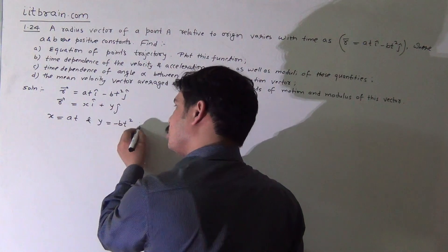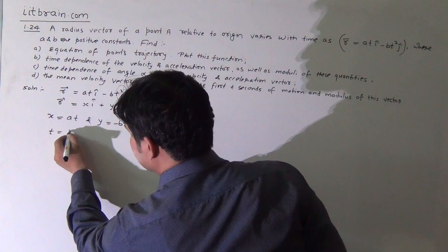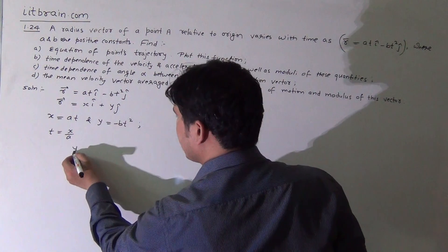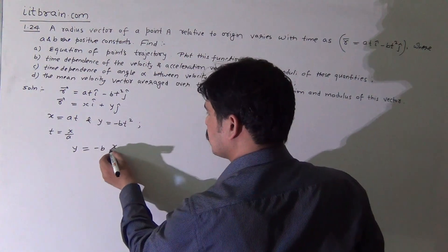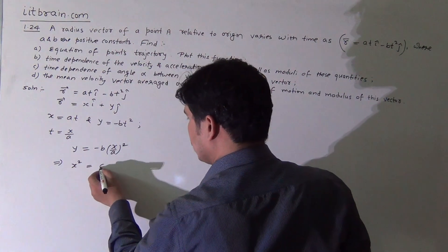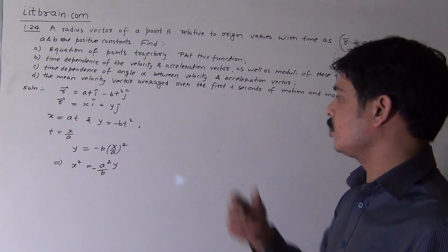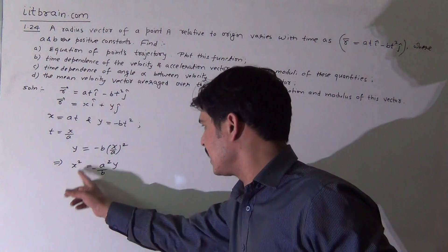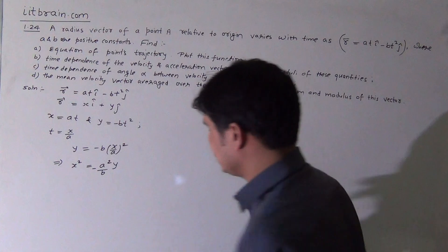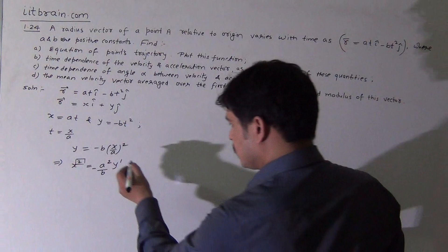Comparing to the standard equation, we get x = at and y = -bt². These are the values of x and y. If we take t = x/a from the first equation and substitute into the second, we get y = -b·(x/a)², which gives x² = -a²·y/b. Since b is positive, the equation of the trajectory is x² = -(a²/b)·y.